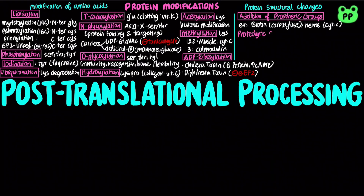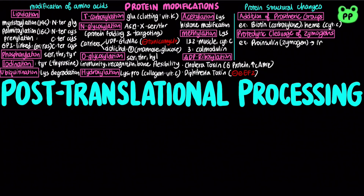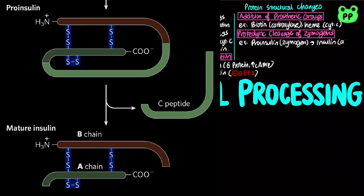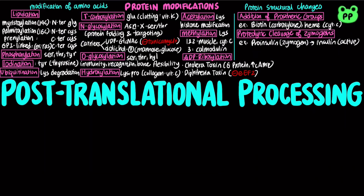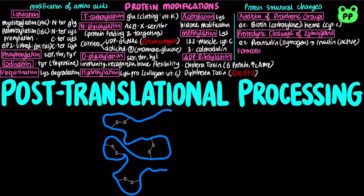Many proteins also undergo proteolytic cleavage. They are initially synthesized as large inactive precursors known as zymogens and will later be cleaved by proteases into the active form. For example, proinsulin is cleaved to insulin. Some proteins form intra-chain or inter-chain disulfide bridges between cysteine residues, which is common for proteins exported from cells and helps protect the native conformation of protein molecules from denaturation.